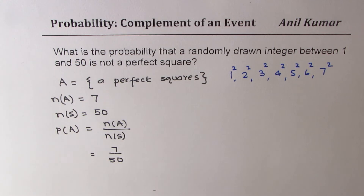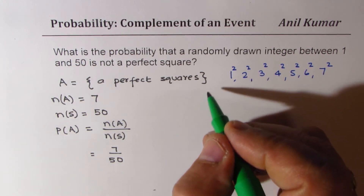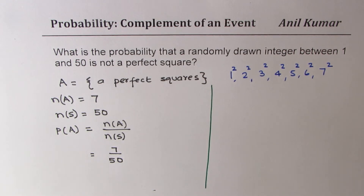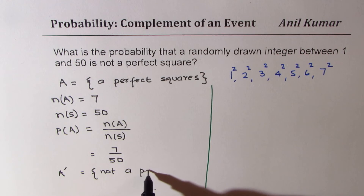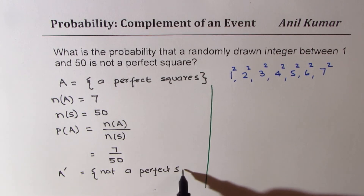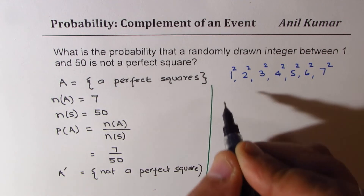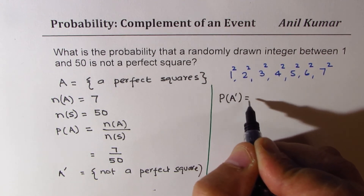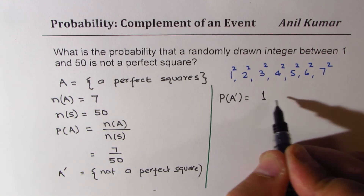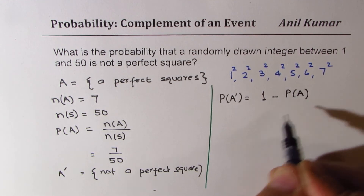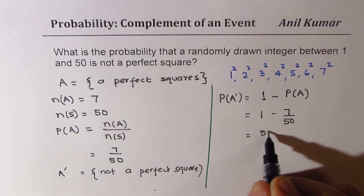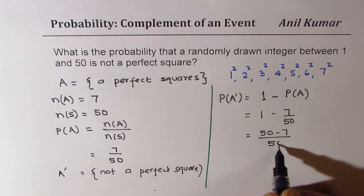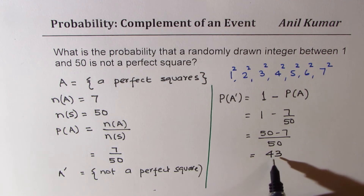Now we are really interested in finding that it is not a perfect square. So the event which we are interested in is the complement of A, which is not a perfect square. To find the probability for the complementary event, we know the sum of probabilities should be 1, so it is 1 minus P(A). So we get 50 minus 7 over 50 as our answer, which is 43 over 50.